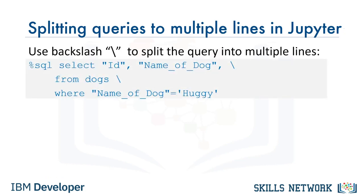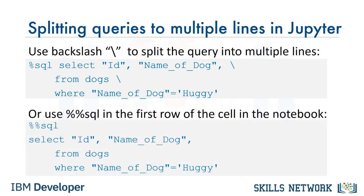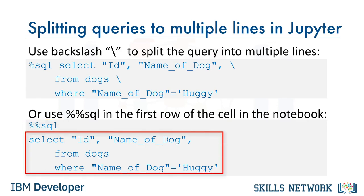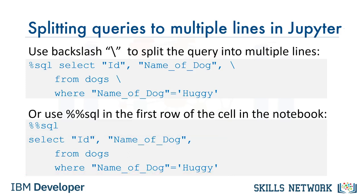For example: %sql SELECT id, name_of_dog \ FROM dogs \ WHERE name_of_dog = 'Huggy'. It would be helpful to take a moment to review the special characters as shown. Please keep in mind that you might get an error if you split the query into multiple lines in a Python notebook without the backslash. When using SQL magic, you can use double percent sql (%%sql) in the first line of the cell in Jupyter notebooks. It implies that the rest of the content of the cell is to be interpreted by SQL magic. For example: %%sql SELECT id, name_of_dog FROM dogs WHERE name_of_dog = 'Huggy'. When using %%sql, the backslash is not needed at the end of each line.